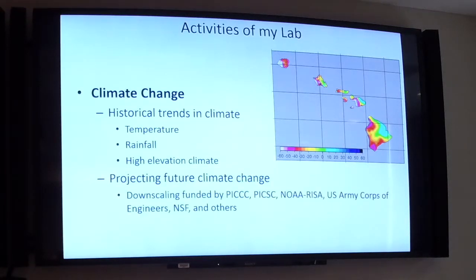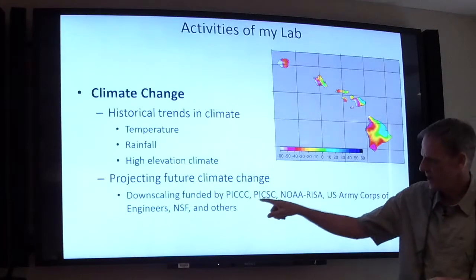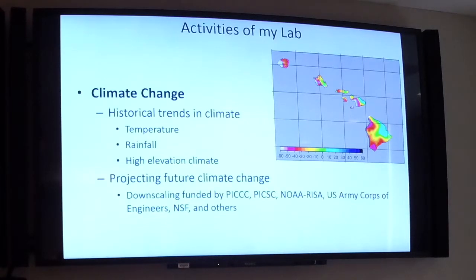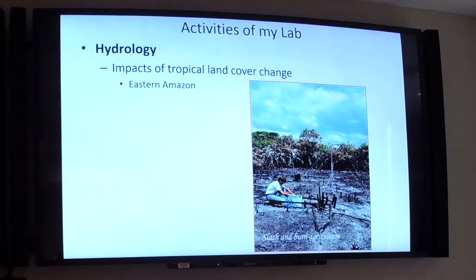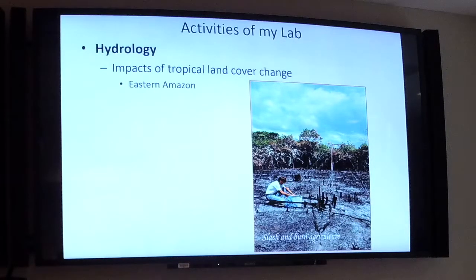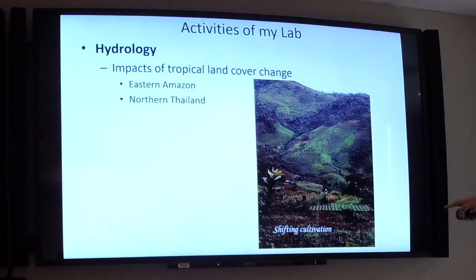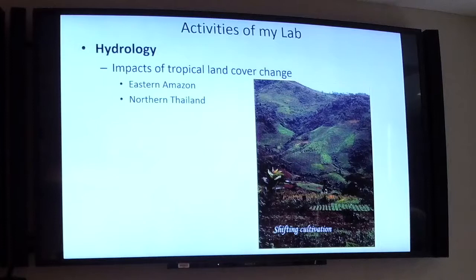We've done a bunch of downscaling studies funded by a number of entities. In hydrology, we've done a lot of work over the past 10 to 30 years on land cover change and how it affects water processes. Much of this work was done outside of Hawaii — in eastern Pará in the Amazon in Brazil, and in northern Thailand where we worked for about 20 years in various projects looking at land cover change in a shifting agricultural environment and how water flows and erosion are affected by human activities.